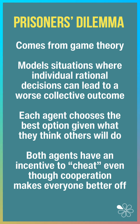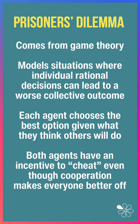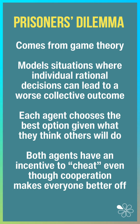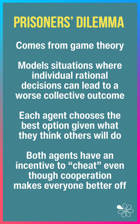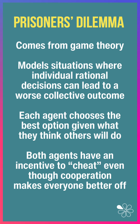Each agent — two firms for example — chooses the best option given what they think others will do, but both agents have an incentive to cheat even though cooperation could make everyone better off.